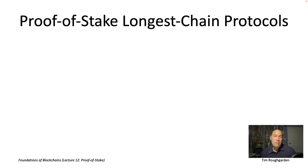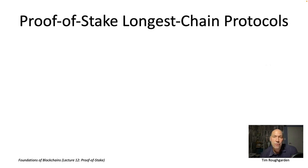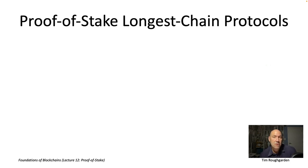With proof-of-stake Sybil resistance, as we've seen in the last three videos, you actually can couple that with BFT-type consensus protocols. Indeed, I think that's one of the main reasons we're seeing this migration from proof of work to proof of stake over the last several years. But proof-of-stake Sybil resistance is more flexible than that — you can also couple proof-of-stake Sybil resistance with longest chain consensus, as we'll see in this video and the next two.